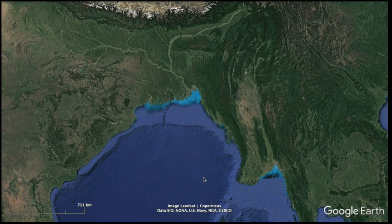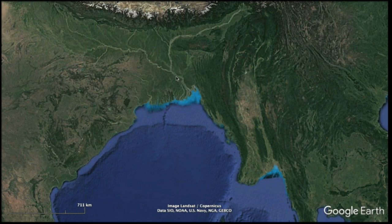Tidal currents strongly influence the redistribution of sediments from deltas. The Brahmaputra River drains off the Tibetan Plateau, and it has so much sediment that it's a braided river. The Ganges River drains the foothills of the Himalayas and part of the Indian subcontinent. They join to build a very significant delta squeezed into this area. The tides here are very high and give this delta its distinctive shape.